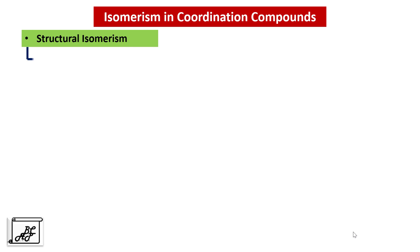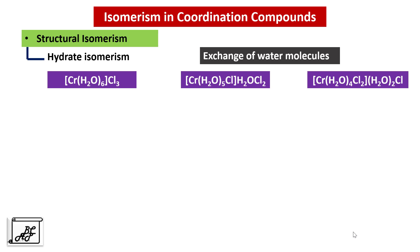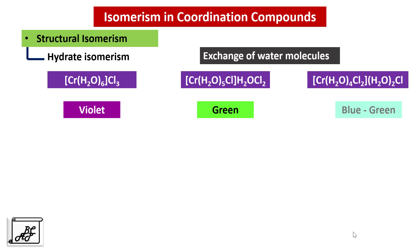Let's move to the next type: Hydrate Isomerism. As the name suggests, they differ in exchange of water molecules. In the first case, there are no water molecules in the primary ionization sphere. In the second case, there is one water molecule, and in the third case, there are two molecules in the primary ionization sphere. The first complex is violet, the second is greenish, and the third is bluish green in color.